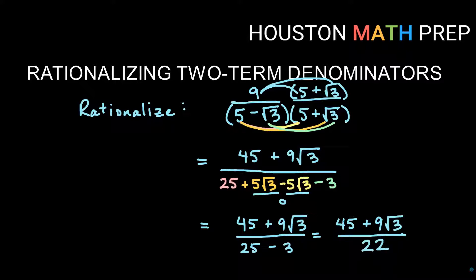25 minus three on the bottom gives us 22. Looking at our outside numbers — 45, nine, and 22 — there are no common factors to reduce by. So that's our answer: 45 plus nine root three over 22. Hopefully multiplying by the conjugate is much easier for you now. Good luck with these two-term denominators.